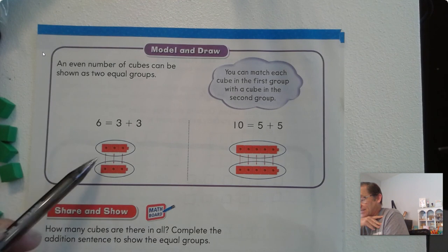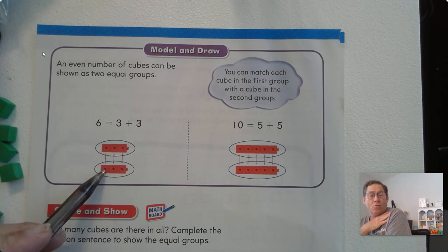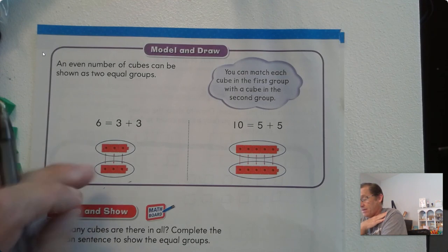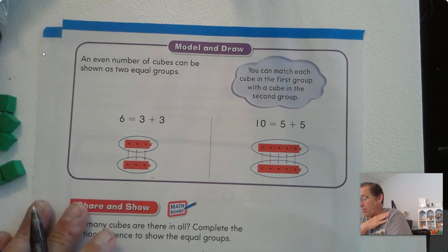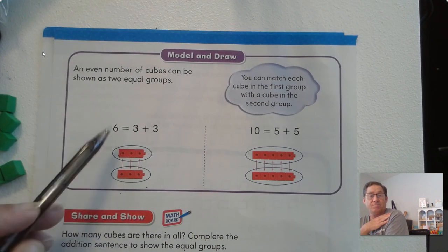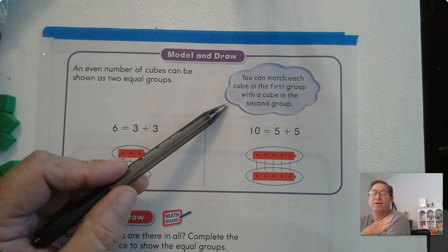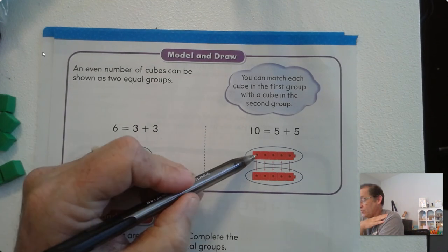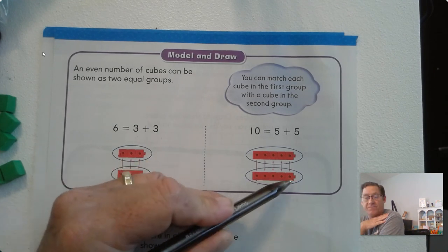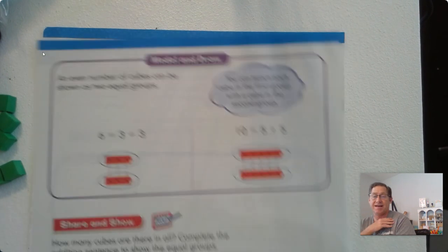So if we have 6, we have 3 pairs of 2 — here's a pair, here's a pair, here's a pair. We have 2 equal groups: there's 3 in this group and 3 in this group, so 3 plus 3 is 6. We can match each cube in the first group with a cube in the second group. Likewise, 5 and 5 gives us 10 — they have an exact match.